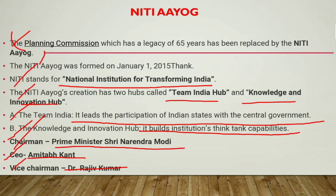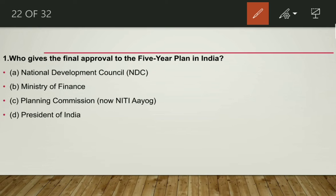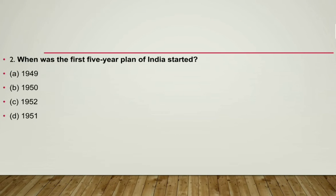Now let's move to multiple choice questions. The first question: who gives the final approval to the 5-year plan in India? The answer is the National Development Council, formed on 6th August 1952, presided by the Prime Minister and the apex body for decision-making on developmental matters. The second question: when was the First Five Year Plan started? The answer is 1951, running up to 1956.